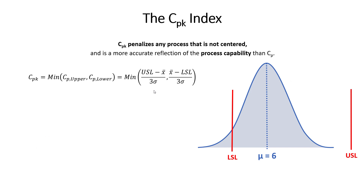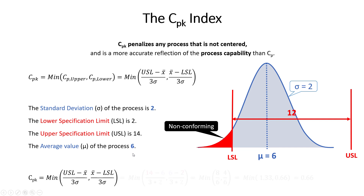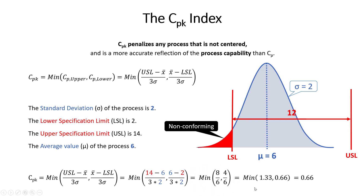Let's work through an example. Standard deviation is 2, upper spec is 14, lower spec is 2 — a specification width of 12 — and the average value is 6, so we're off center. Plugging into CPK: upper spec minus mean divided by 3 times 2, and mean minus lower spec divided by 6. The minimum of those two fractions gives a CPK value of 0.66, which is a much more accurate reflection of process capability given the amount of non-conforming material we would expect.